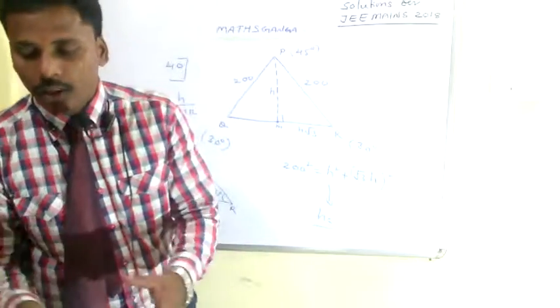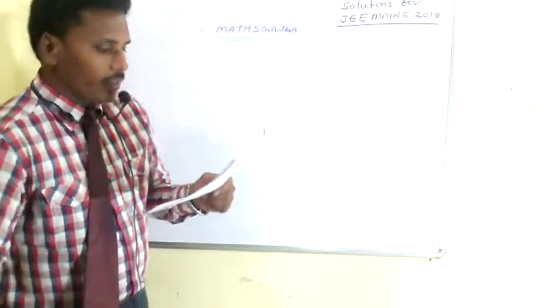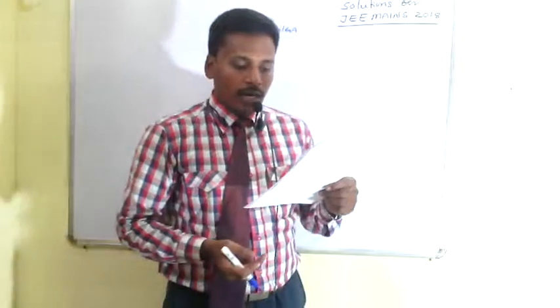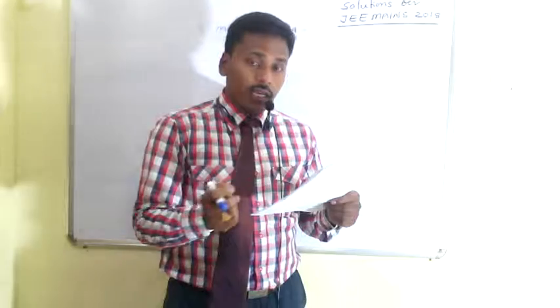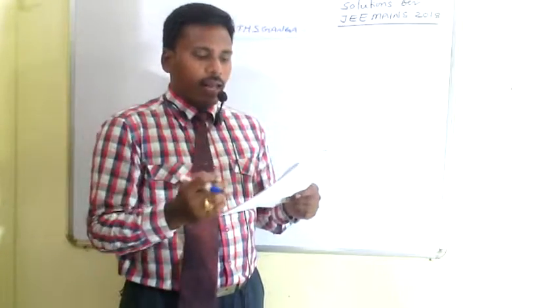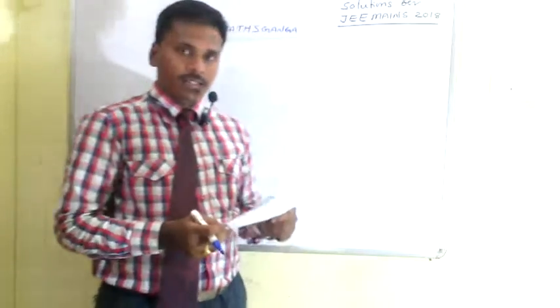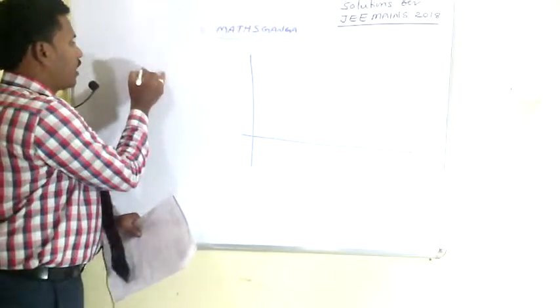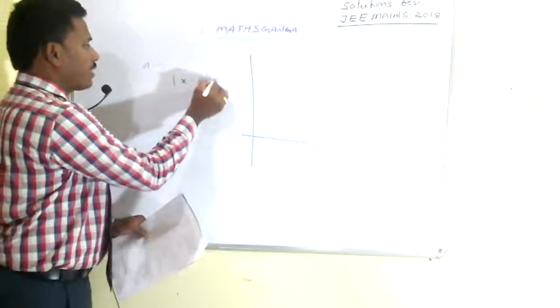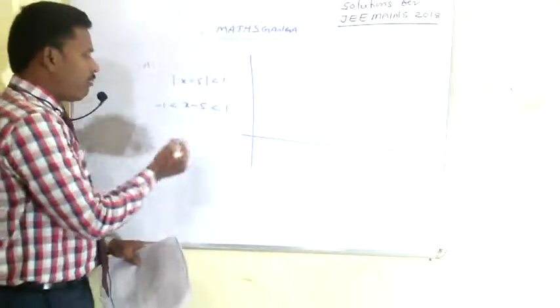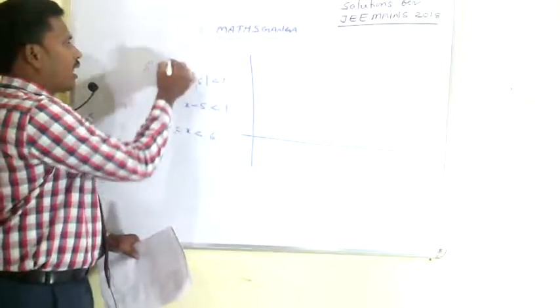Now for question 41. Two sets A and B are given. Set A contains ordered pairs (a, b) such that |a − 5| < 1 and |b − 5| < 1. Set B contains ordered pairs (a, b) such that 4(a − 6)² + 9(b − 5)² ≤ 36. Treating a as x and b as y, and representing the sets on a coordinate system: for Set A, |x − 5| < 1 gives −1 < x − 5 < 1, so 4 < x < 6.